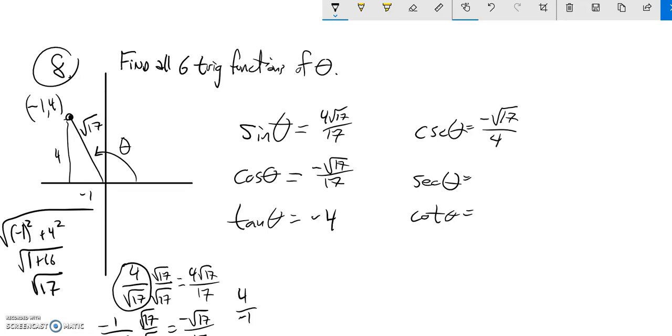Similarly, secant goes to cosine. Cosine was negative one over square root of seventeen, so that would just be negative square root of seventeen. I don't need to write the one part. Cotangent is tangent flipped over—it's negative four—so cotangent is negative one fourth. There they all are.